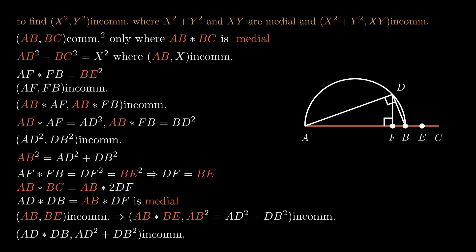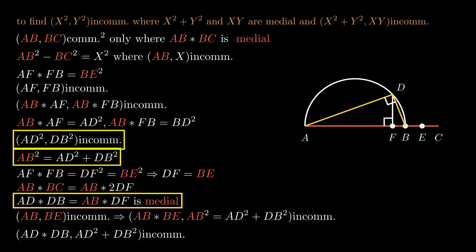Overall, we have two lines, ad and db, whose squares are incommensurable, whose sum of squares and product are both medial but incommensurable with each other.